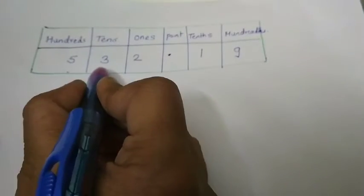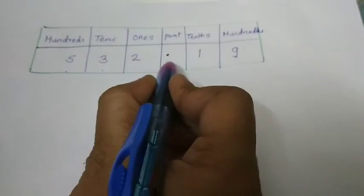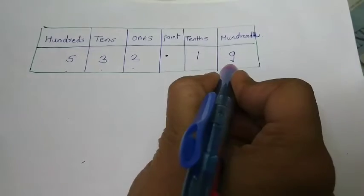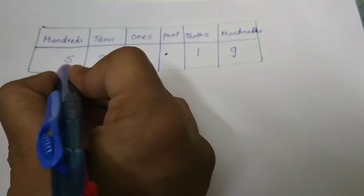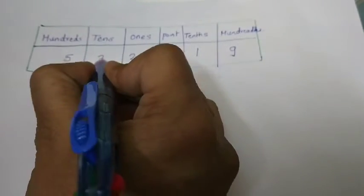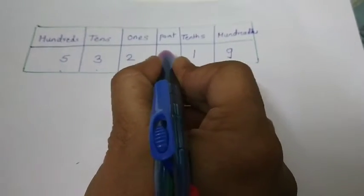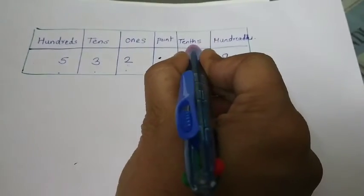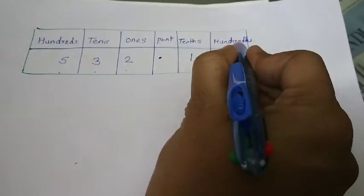That means 532.19 is 5 hundreds, 3 tens, 2 ones, 1 tenth, and 9 hundredths.